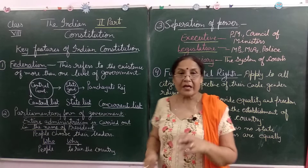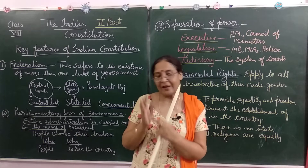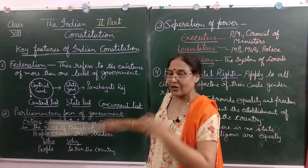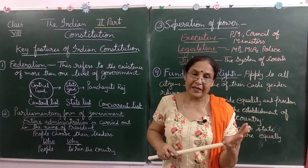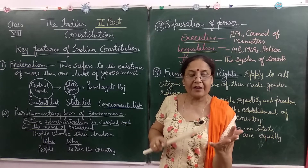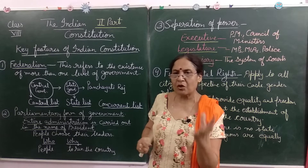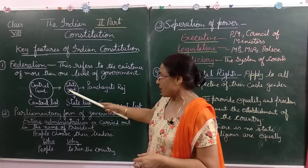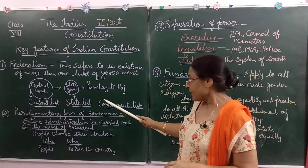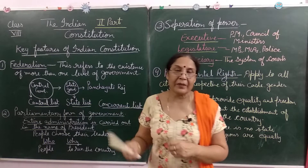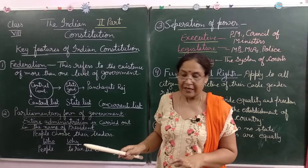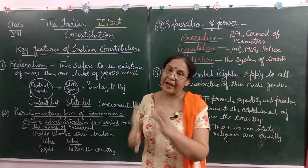Second is the State List. Because every state's climate is different, their problems are different, and their language is different, states have to look at their own problems and build their own laws. For example, agriculture, trade, and education are given to the state government. And then there is the Concurrent List, on which both state and central government can make laws. So these three lists are provided by our constitution so that no one can interfere with anyone else.